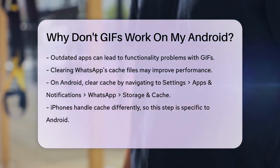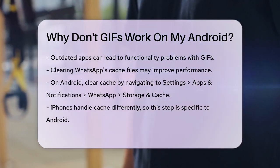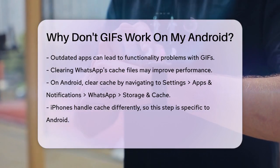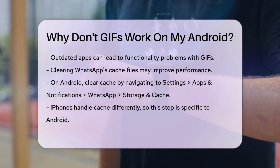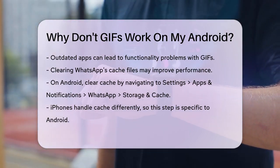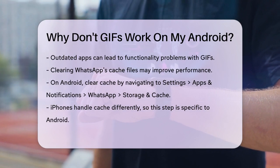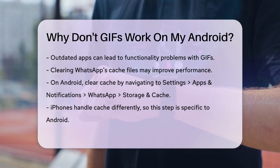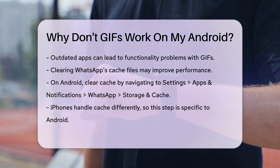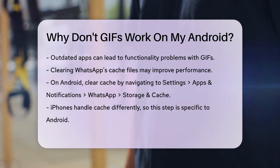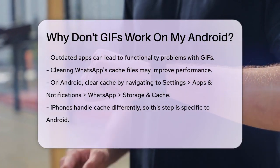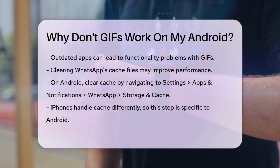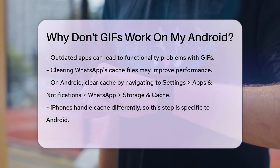Cache files can also be a culprit. Clearing WhatsApp's cache files can help resolve performance issues. On your Android device, go to Settings, select Apps and Notifications, find WhatsApp, and then go to Storage and Cache. Tap Clear Cache to delete these files. Note that iPhones don't store cache files in the same way.